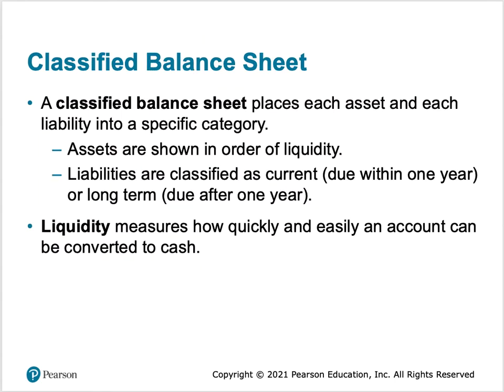In this chapter we expand the balance sheet into a classified balance sheet. That means we add additional labels and organization so that all information is sorted into a specific category — assets shown in order of liquidity, and liabilities classified as current, meaning within a year, or long-term, meaning due after a year.